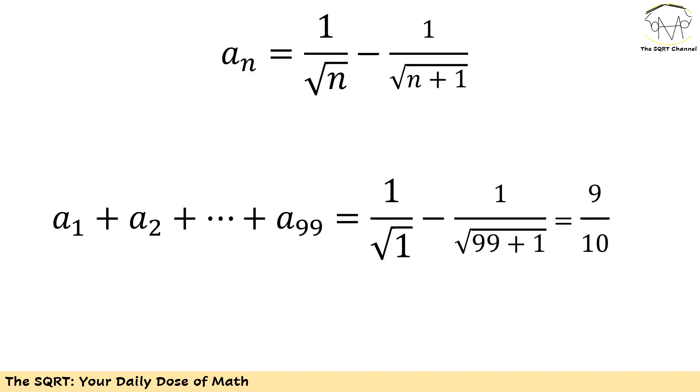This is a telescoping series since I'm going to use this a_n and then I'm interested in a_1 plus a_2 plus a_3 up to a_99. The answer is going to be the first term minus the last term which is basically 1/√1 minus 1/√(99+1) which is 1 minus 1/10 and we will have 9/10 for the final answer.